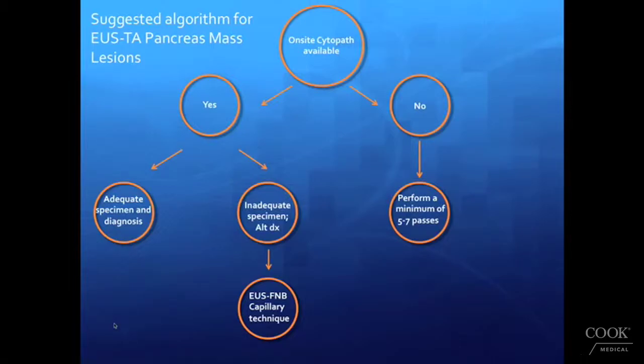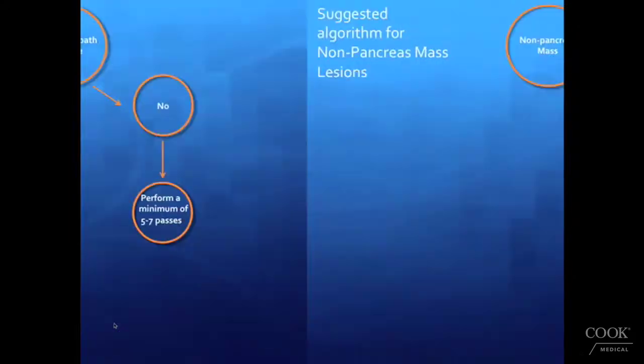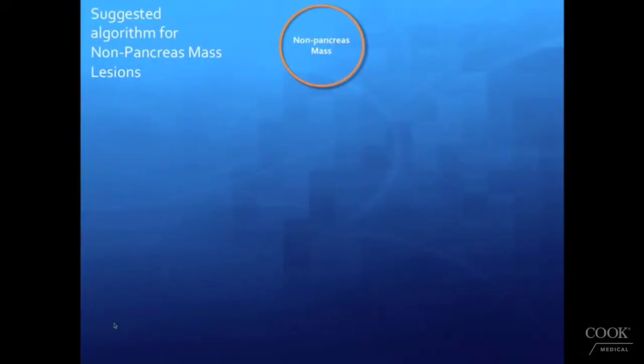If the on-site determination of fine needle aspirate in a pancreas lesion is inadequate, or an alternative diagnosis such as autoimmune pancreatitis or lymphoma is considered, EUS-guided fine needle biopsy with the ECHOTIP Procore needle using capillary technique is recommended.